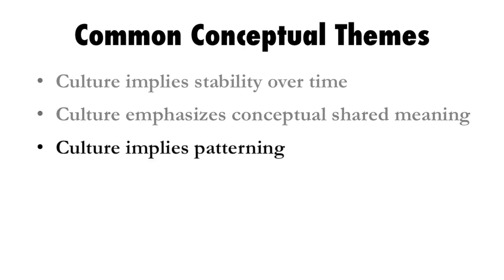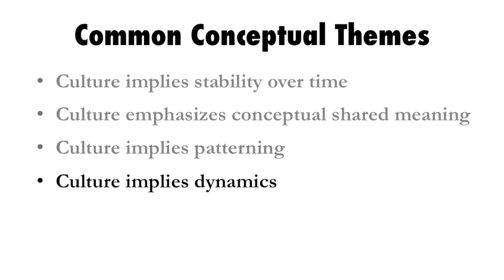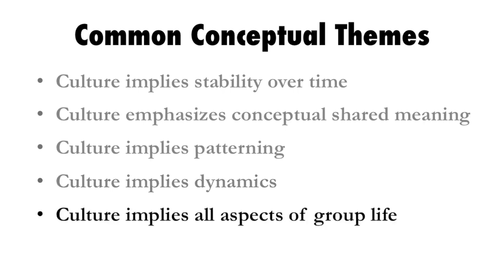Culture implies patterning. If you've ever joined a new organization and everything looks chaotic and random at first, over time you learn there's a pattern that has emerged for a reason that members of the culture understand. Culture implies dynamics — even though it's stable over time, we're talking about human beings and interaction, so there is change as well; it's a dynamic moving target. Finally, culture implies all aspects of group life — it's not off to the side. Culture is a through-and-through part of everybody's experience in the group.